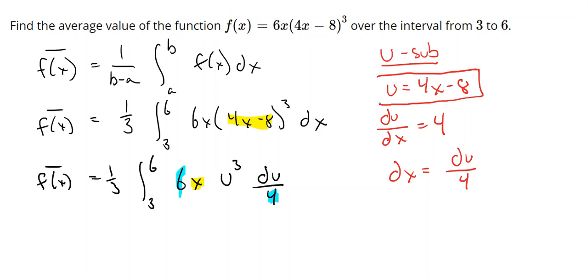And so what we're going to need to do is we need to go over to our definition of u and solve that for x. So we have 4x minus 8 is equal to u, or 4x is equal to u plus 8, or x is equal to 1 fourth u plus 2.